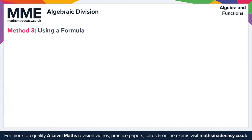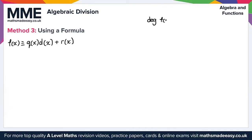Moving on to method 3, which is using a formula. This method makes use of the following identity: a polynomial f of x can be written as f of x ≡ q of x times d of x plus r of x, where q of x is the quotient, d of x is the divisor, and r of x is the remainder. The degree of the quotient is the degree of f of x minus the degree of d of x, and the degree of r of x must be less than the degree of d of x.